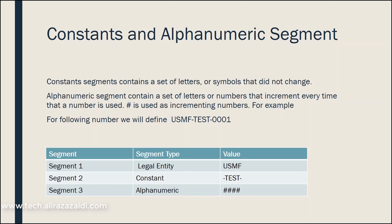The alphanumeric segment contains a set of literals or numeric values that increment every time a new number is generated. Hash symbols are used as incrementing numbers. For example, if we define a legal entity-based number sequence, it might look like USMF-test-0001. Segment 1 is for legal entity, with USMF as the value. Segment 2 is a constant holding the value 'test'. Segment 3 is alphanumeric, using 4 hash symbols to define a 4-digit value — the first value is 0001 and the maximum value is 9999.